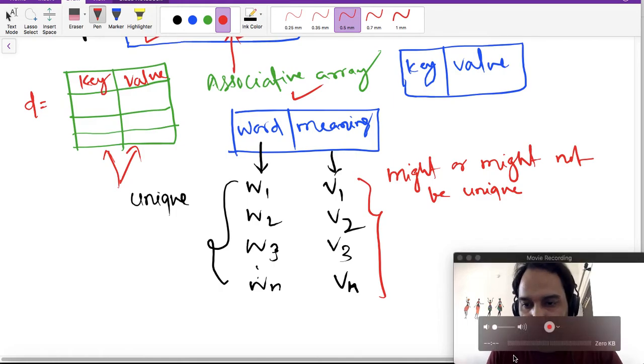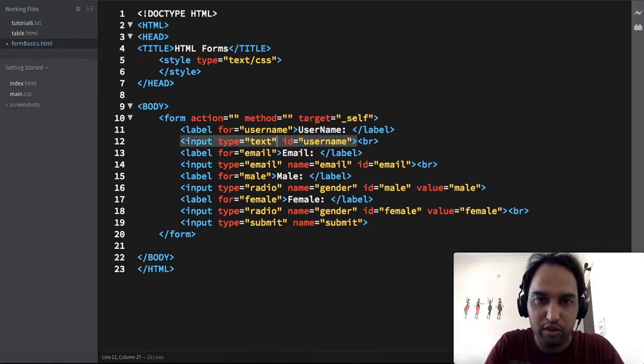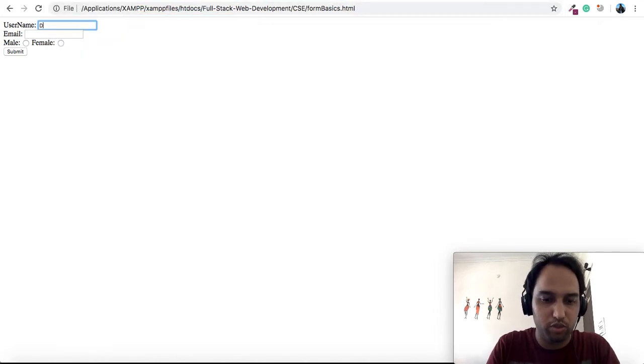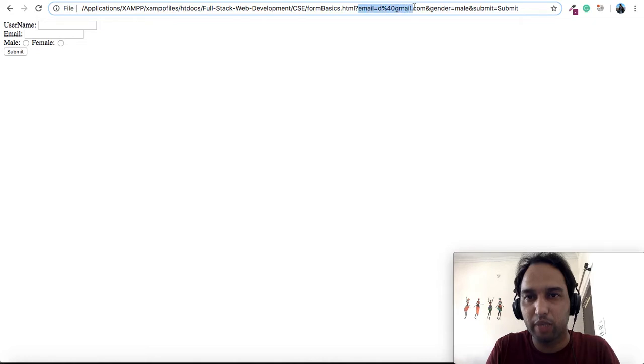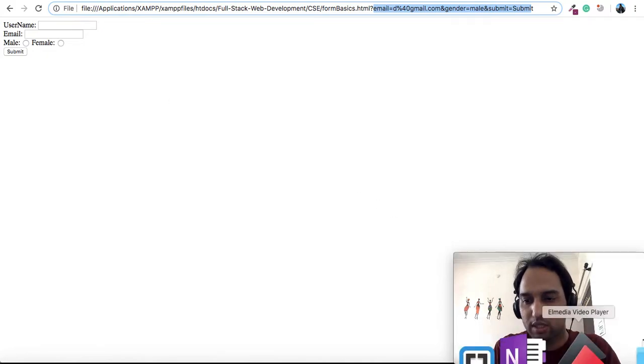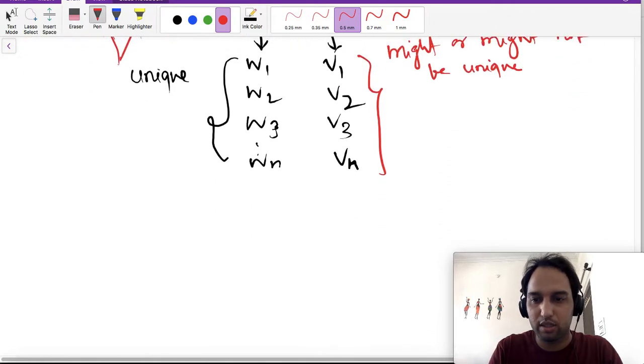Let us try by removing this name field from one of the input values, as we have done with username, and try to run the program. Put a debug name so that it's easily recognizable, and when submitted, you can see we are getting email, gender, and submit, but we don't get username. So this is the meaning of putting the name attribute.